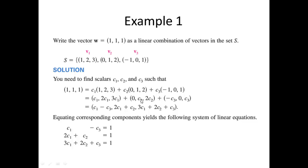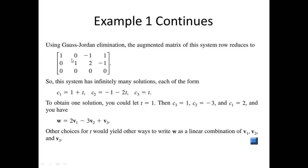Then use your standard definitions of scalar multiplication, addition, and equality of vectors. We end up with C1 minus C3, 2C1 plus C2, and 3C1 plus 2C2 plus C3 as the first, second, and third components. Setting up the augmented matrix and applying reduced row echelon form in math studio, we end up with infinitely many solutions. Setting T equal to 1, W is written as a linear combination of V1, V2, and V3. Beautiful.